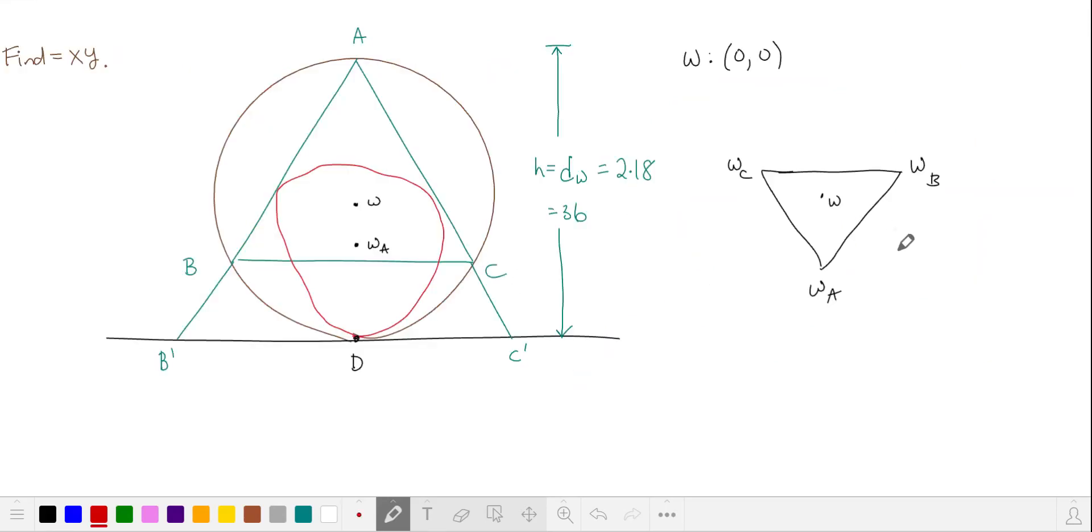Omega is also the center of the equilateral triangle formed by the centers of our three circles, omegas a, b, and c. So let's find the distance between omega and omega a, and then that should give us an idea of where omegas b and c are.